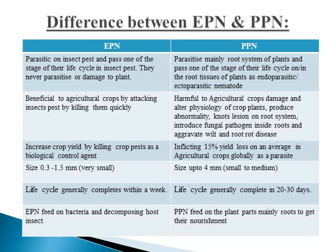Plant parasitic nematodes cause root knots, root digestion, and damage to the root system, and also allow entry of plant pathogens. EPN increases crop yield by killing crop pests, whereas PPN reduces yield by more than 50% to 100% in some cases. When comparing size, EPN is very small at 0.3 to 1.5 mm, and plant parasitic nematodes are near about 4 mm in size.